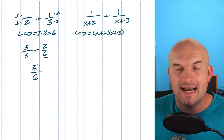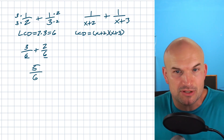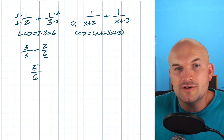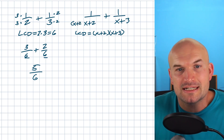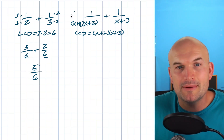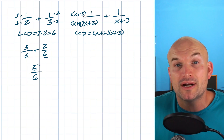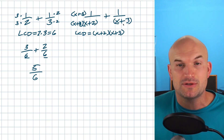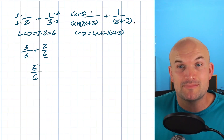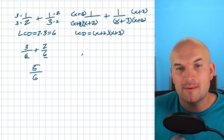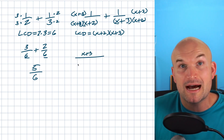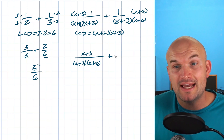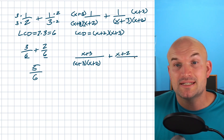If this is my LCD and I already have X plus two in my denominator and I want to produce X plus two times X plus three, all I simply need to do is multiply that by X plus three. I'm going to use parentheses here and do that in the numerator as well. And over here, if I already have an X plus three but I want X plus three times X plus two, I'll just multiply by X plus two over X plus two. So on my numerator I'm going to have X plus three, and over here I'm going to have X plus two, all over the common denominator.